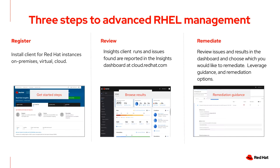Second, review the findings in Red Hat Insights and create reports for your team to review and prioritize. Finally, remediate. You can prioritize what you'd like to fix, follow step-by-step instructions, and in many cases dynamically generate an Ansible playbook to help with automating the remediation steps.